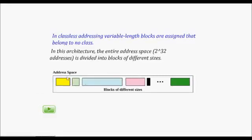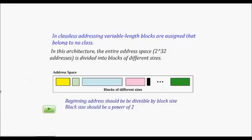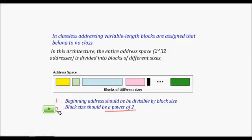There are two restrictions on classless address blocks. First, the beginning address of a block must be divisible by the block size. Second, the block size must be a power of two. These two restrictions are important and must always be satisfied.